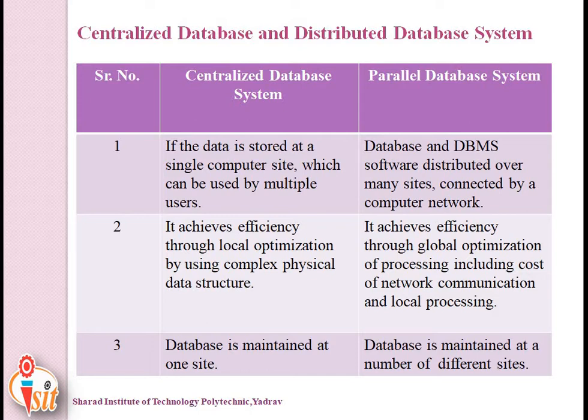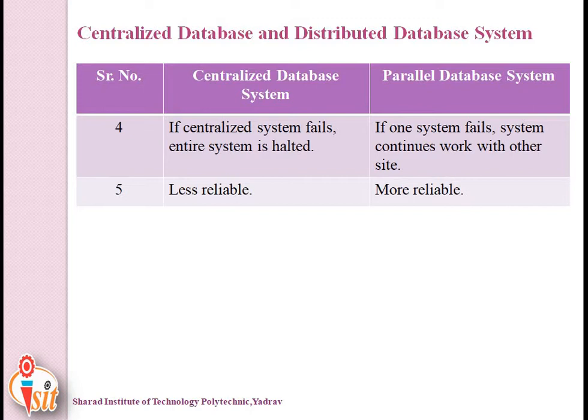If a centralized database system fails, the entire system gets failed. In a parallel system, if one system fails, the system continues to work with other sites. The last difference is that a centralized database system is less reliable while a parallel database system is more reliable.